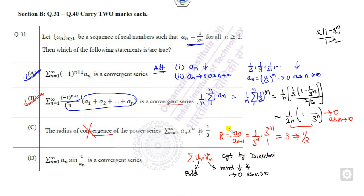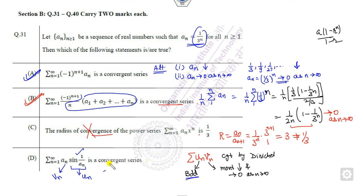We check which is U and which is V. This series is always bounded, so I consider it as V_N. A_N is considered as the other part. The bounded condition is satisfied, and we already proved that A_N goes to 0 and is monotonically decreasing. So by the Dirichlet test, this is also convergent. The correct answers to this problem are options A, B, and D.